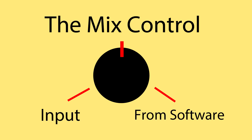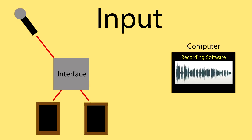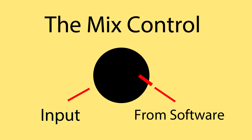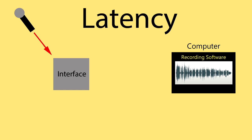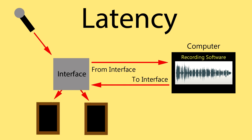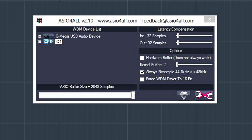Let's talk a little more about the mix control knob. With the mix control knob turned all the way to the left to input, you will hear 100% of the signal coming from the microphone or instrument. With the mix control turned all the way to the right, you will hear 100% of the signal coming from the computer or software. If you record with the mix control knob in this position, depending on the speed of your system, you may experience something called latency. Latency refers to the time it takes for you to hear the signal from the microphone after it is processed through the interface and the software. You can adjust for this with the interface control software.